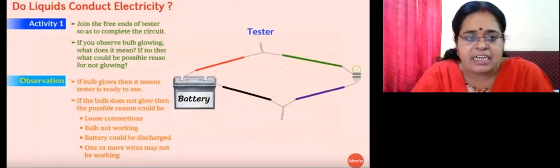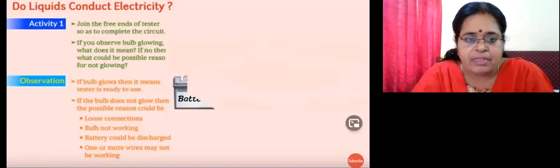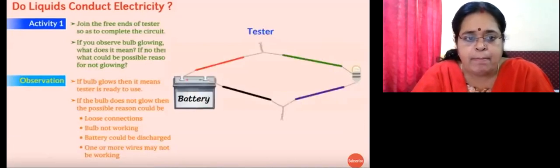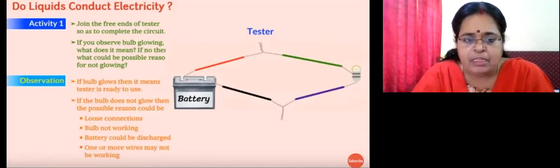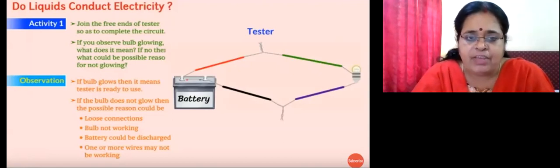The question is: do liquids conduct electricity? Look at Activity One. Join the free ends of the tester so as to complete the circuit, which consists of the tester, the battery, and the bulb. If you observe the bulb glowing, that means electricity is passing through the wires. If the bulb glows, the tester is ready to use. But if the bulb is not glowing, there could be many reasons — loose connections, the bulb may be fused, the battery could be discharged, or the wires connected in the circuit may not be working. We have to check all of that before conducting the activity.